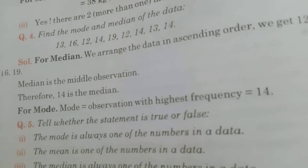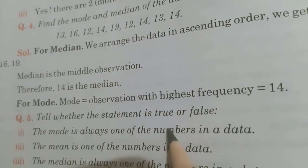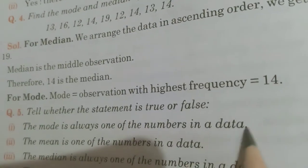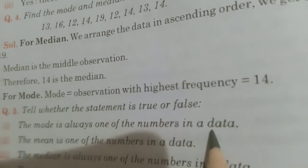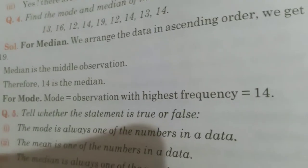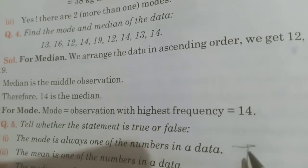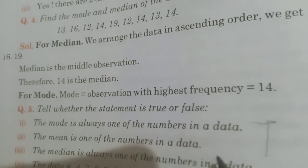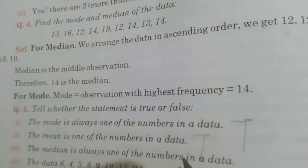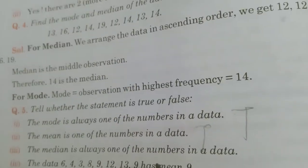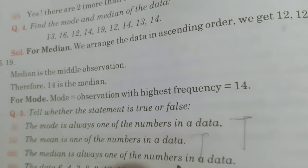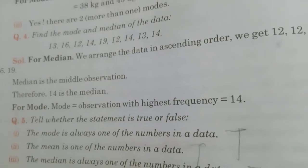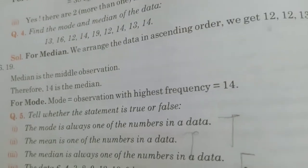Now, tell whether the statement is true or false. First, mode is always one of the numbers in a data. Means, what are the numbers in data? From that only one number will be the mode. It is true. Means, mode is coming from those numbers only. Mean is one of the numbers in a data. Mean is also from data. Okay. Next one is, the median is always one of the numbers in a data. Median is not always a number from the data. Sometimes, it is the average. Addition divided by total number. Therefore, it cannot be from data always. Okay.